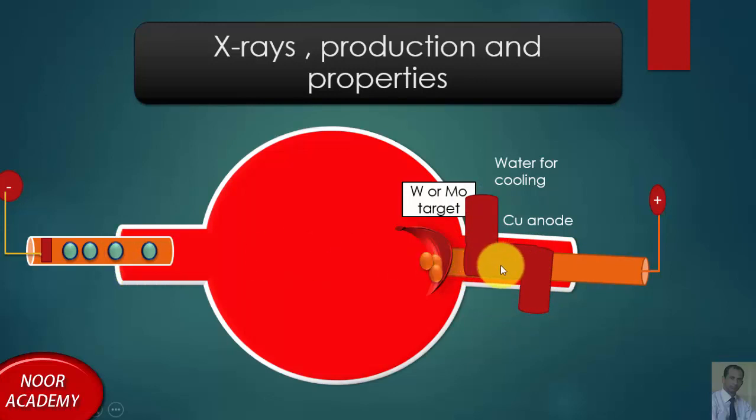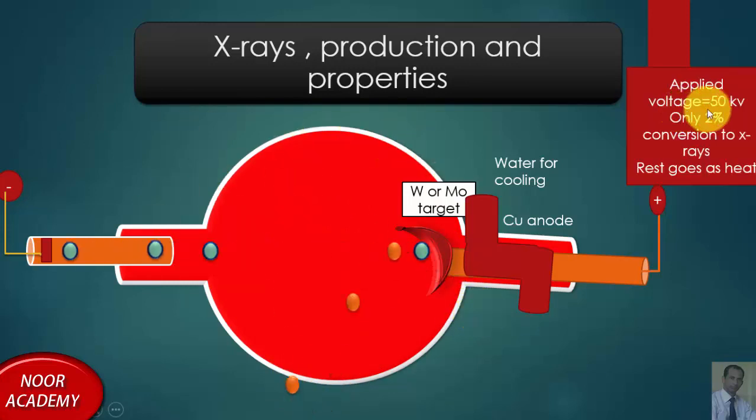Electrons coming from this side are being produced by thermionic emission of the electrode. When these electrons come to hit this metal target, X-rays are emitted from this metal target and they go out of this window that is provided over here. This is how X-rays are produced. The applied voltage is 50 kilovolts. Only 2% conversion to X-rays takes place; rest of the energy goes to heat.